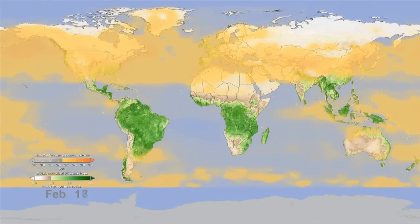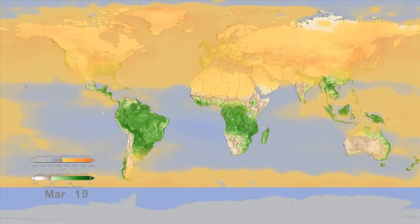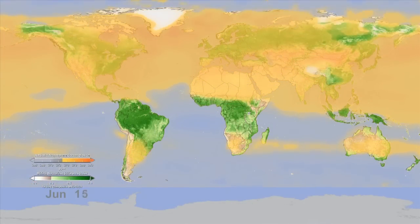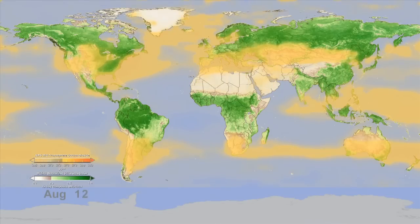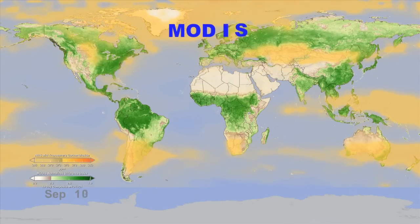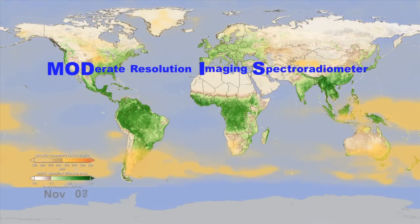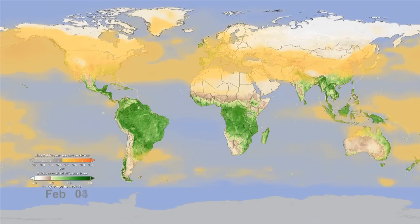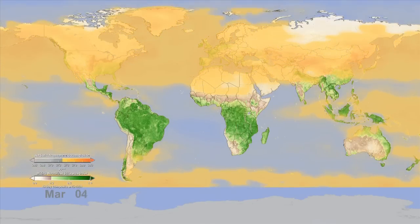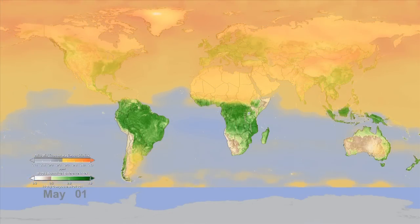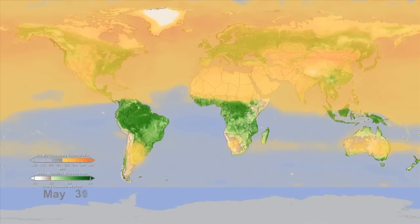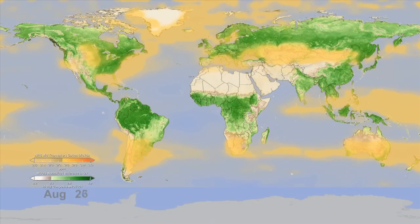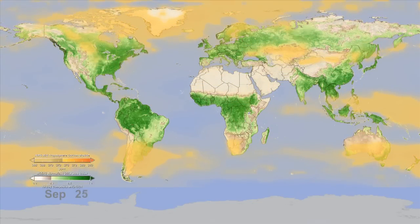In this animation, orange represents carbon dioxide as measured by AIRS. Green represents the concentration of vegetation measured by another instrument on the AQUA satellite called MODIS. Here we've taken out human sources of carbon dioxide to see the natural cycle of the gas as it's affected by the seasonal photosynthesis and respiration of trees and plants around the globe.